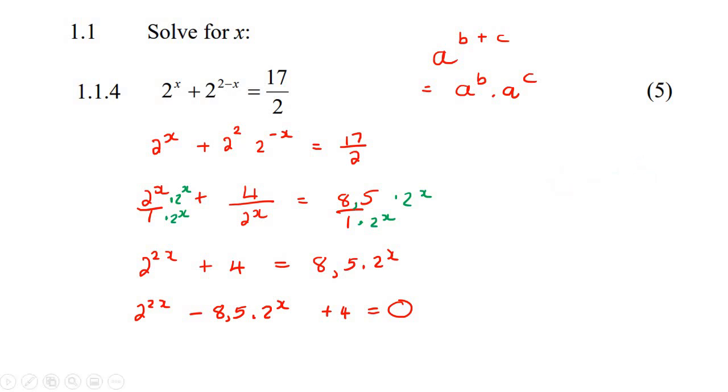So what some learners like to do now is they use the k method, so we can say let this one, the smaller one, don't let the double one, let the smaller one, which is 2 to the x, let that equal to k.